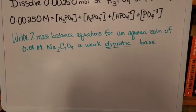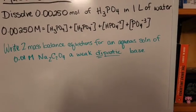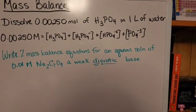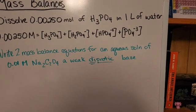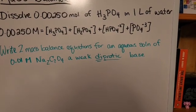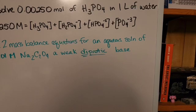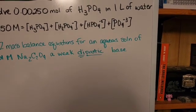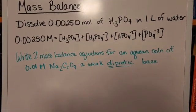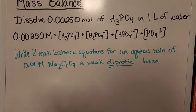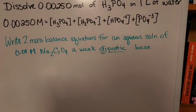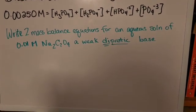Now, the next equation is one that I actually took from one of the practice quizzes on this section. Write two mass balance equations for an aqueous solution of 0.01 molar Na2C2O4, a weak diprotic base. Okay, now diprotic base means that it is going to take on hydrogen ions in two stages. So it'll take one on first, and in the second round, it'll take a second one. So I'm going to pause the video for a second, and I'm going to write our mass balance equations up here.